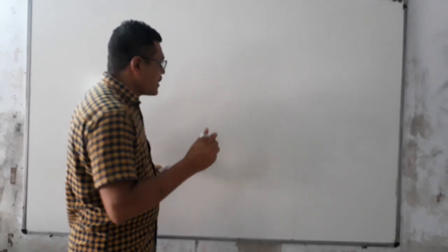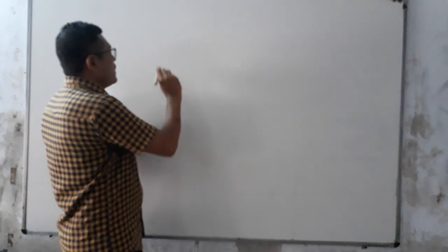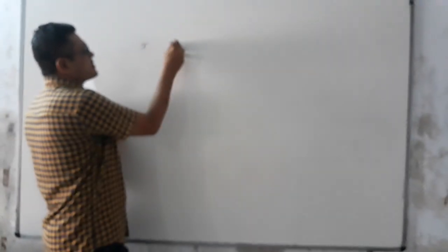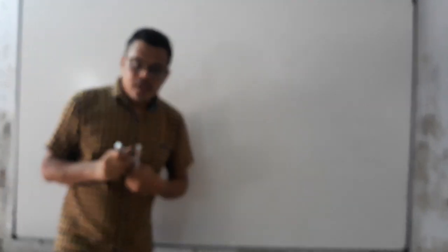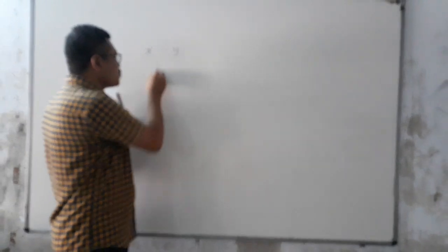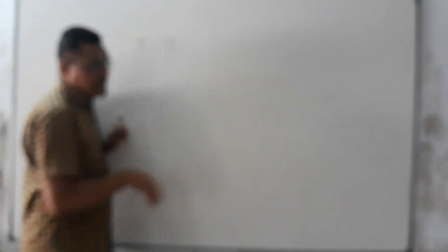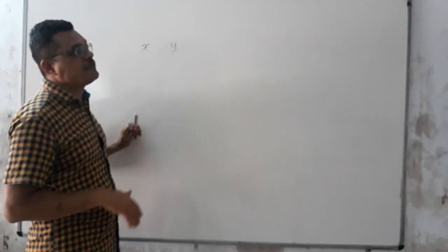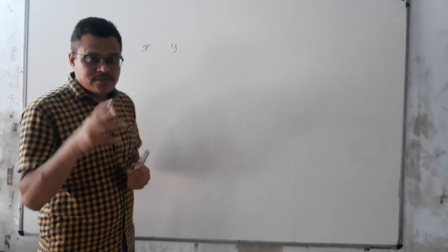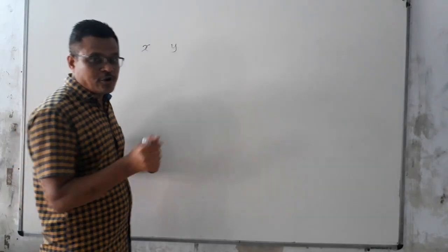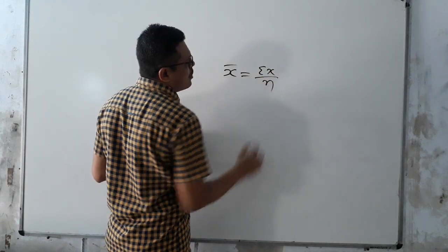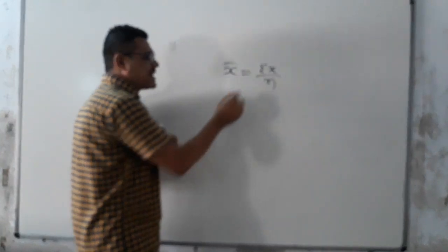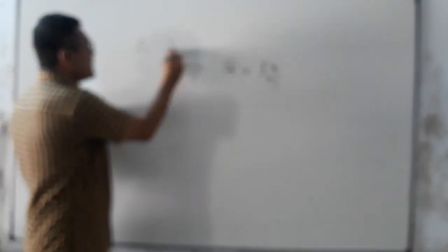For example, in the calculation of mean, we use columns X and Y. We are using the formula for standard 11th and standard 12th — the simple formula for the mean: X̄ = ΣX upon N.